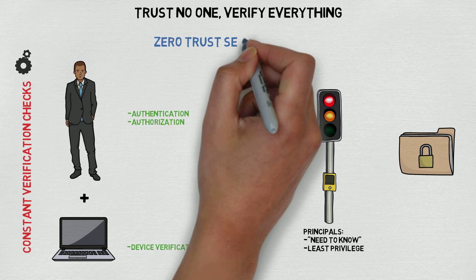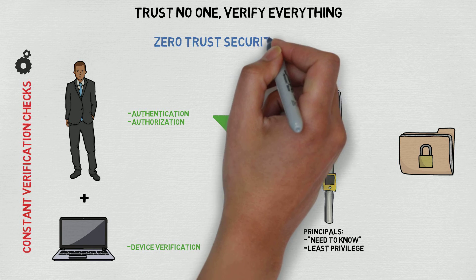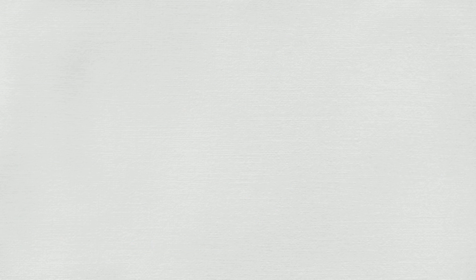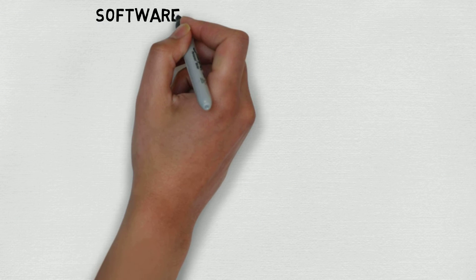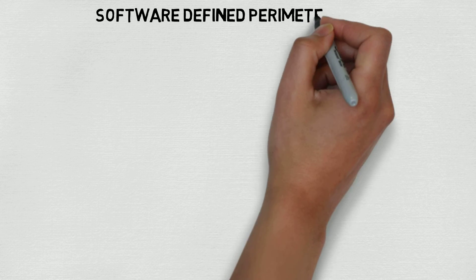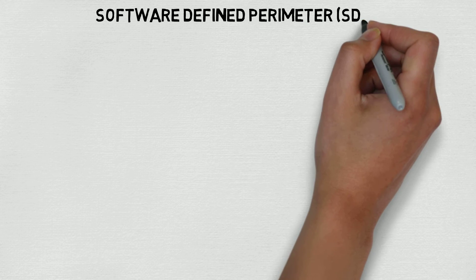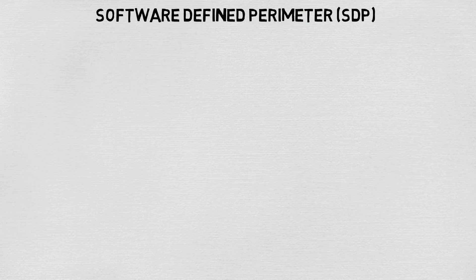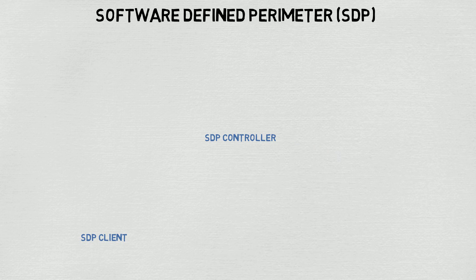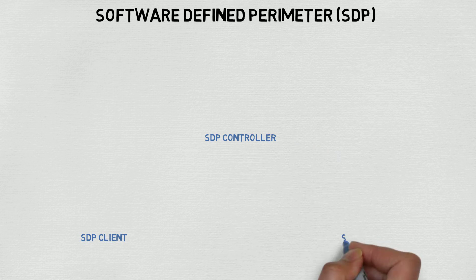An untrusted device is completely shut off from the rest of the network to prevent data exfiltration and lateral movement. Because Zero Trust Security is just a model, there are many products and technologies that can help us get there. A relatively new technology known as Software Defined Perimeter, or SDP, helps carry out many of the Zero Trust principles on your network. SDP borrows ideas from SDN in building out the Zero Trust network, and there are three main components you need to know: the SDP client, the controller, and the gateway.